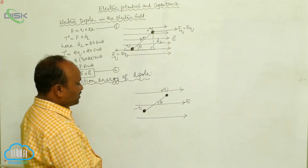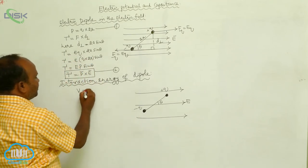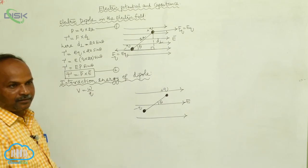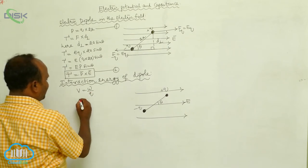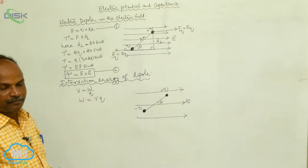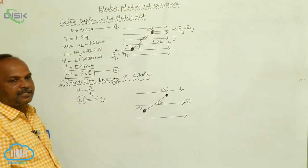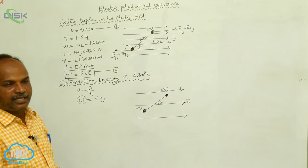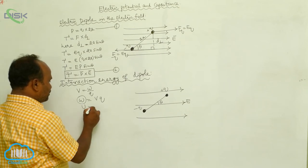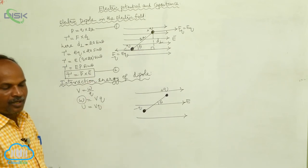From the relation, potential V equals W by Q, we get W equals V into Q. This work done represents the interaction energy, which is represented as U equals V into Q.